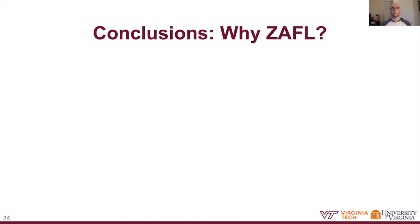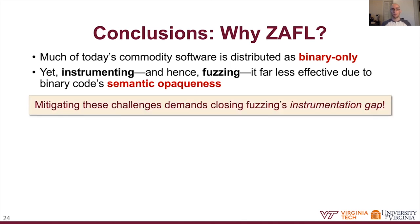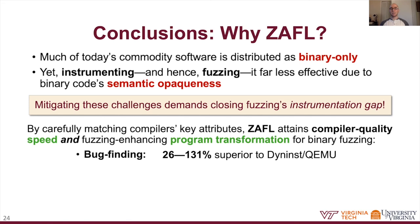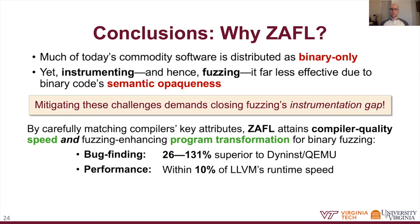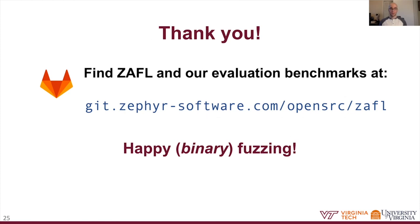In conclusion, much of today's commodity software is distributed as binary-only, and instrumenting binary-only code is far more challenging due to its semantic opaqueness, making fuzzing far less effective. Mitigating these challenges demands closing the long-standing instrumentation gap between source-available and binary-only fuzzing. By carefully identifying and matching the attributes that make compilers successful for fuzzing instrumentation, Zaful is the first to extend compiler-level speed and fuzzing transformation capabilities to binary-only fuzzing, exposing many more bugs than Dyninst and QEMU while maintaining performance within 10% of compiler instrumentation and scaling to multiple platforms, file sizes, complexity, and other characteristics. Thank you for viewing this talk—check out the Zaful source code and evaluation benchmarks at the provided link. Happy fuzzing!